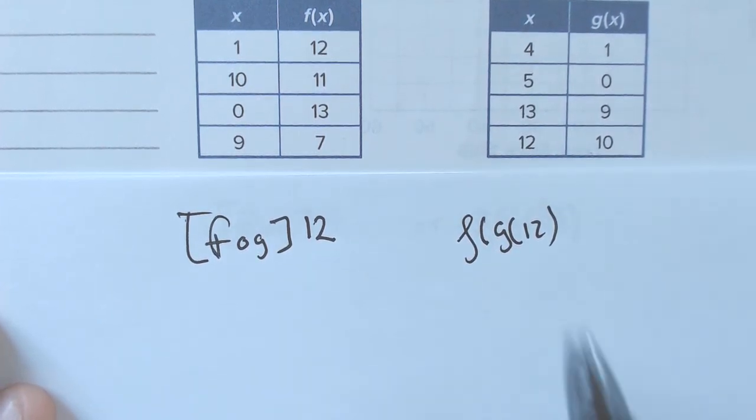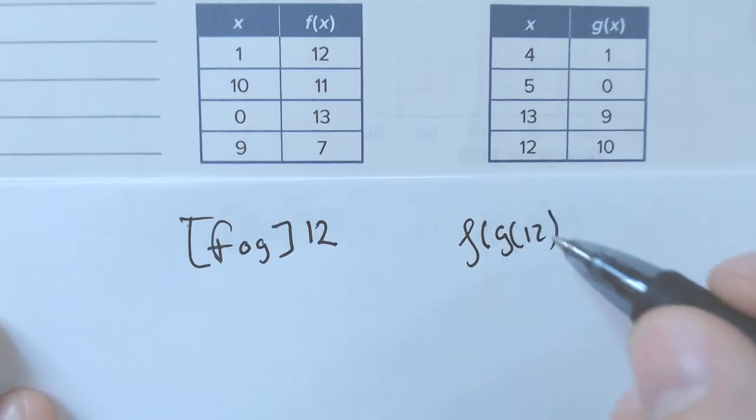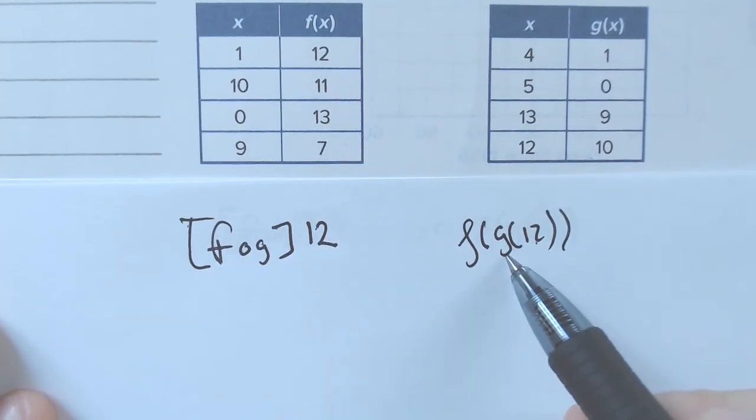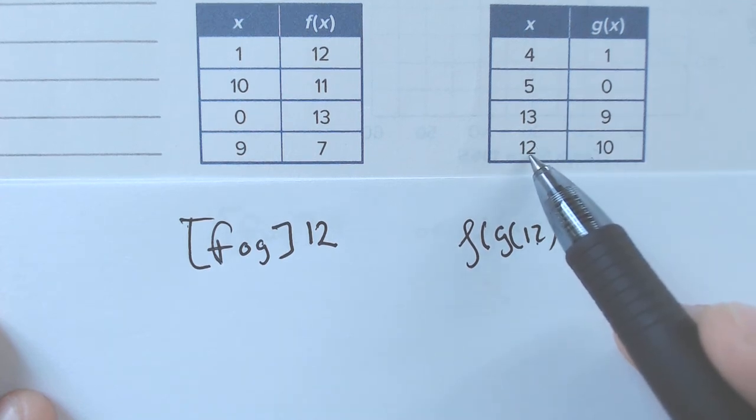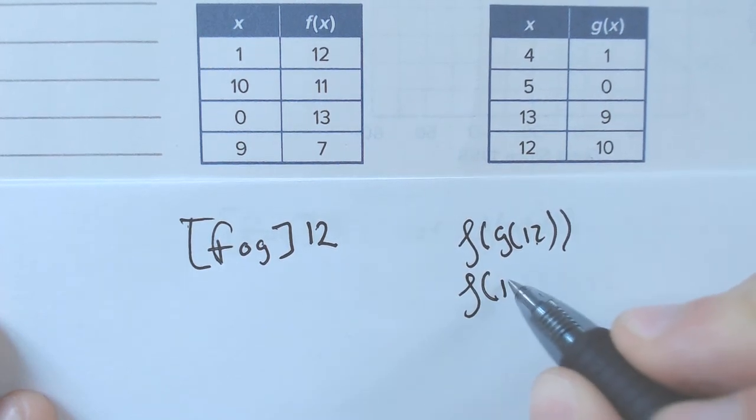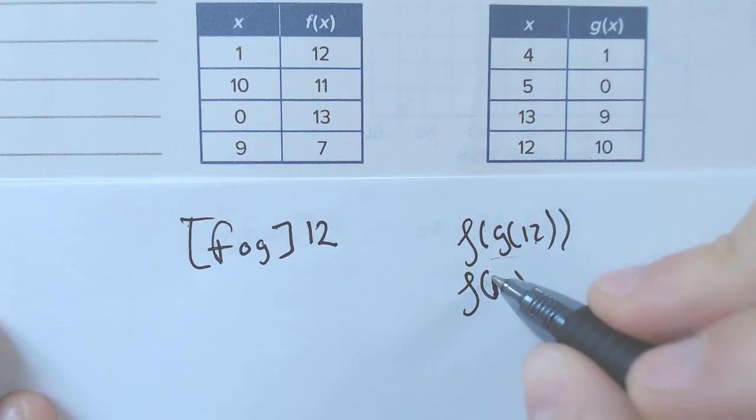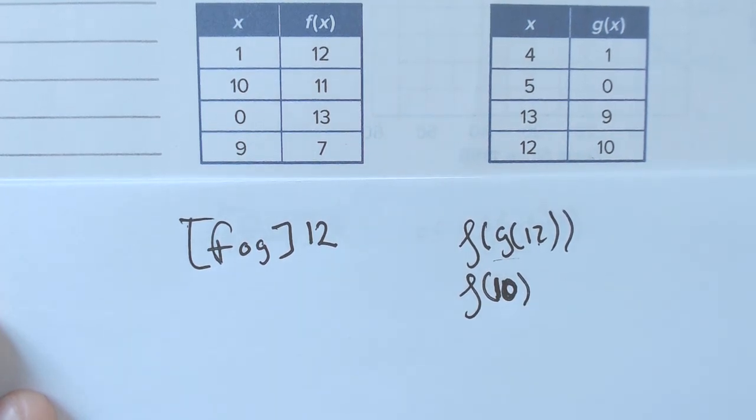Well, that means that we would be taking the x value of 12 into the g of x function, which is right here. And when I plug in 12, I get out a 10. So, this is going to be f of 10, because g of 12 is 10.